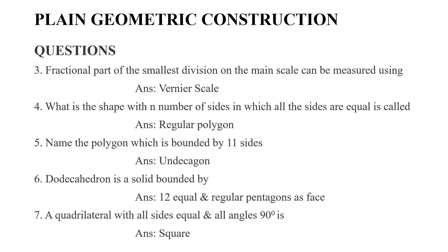The next question: fractions of parts of small divisions on the main scale can be measured using a vernier or diagonal scale. Also: name the polygon bounded by 11 sides. The answer relates to an 11-sided polygon. A dodecagon is bounded by 12 sides — it is a solid bounded by 12 regular pentagonal faces.